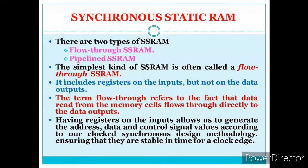There are two types of synchronous static RAMs: flow-through SSRAM and pipelined SSRAM. The simplest is the flow-through type — like water flowing through a pipe, data given at the input immediately passes to the output. It includes registers on the inputs but not on the data output, so data read from the memory cell flows directly to the output.